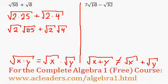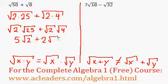So root 25 is just 5, and 5 times root 2 is just 5 root 2. And here we have root 2 times root 4. Root 4 is 2. 2 times root 2 is just 2 root 2.